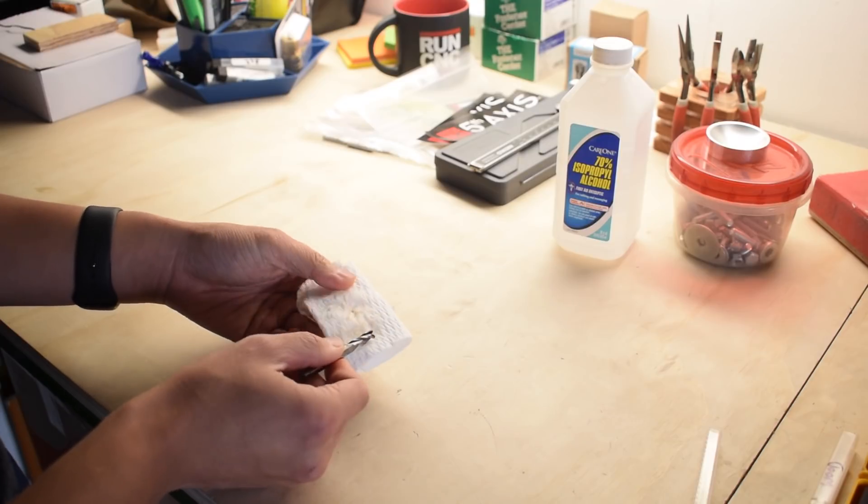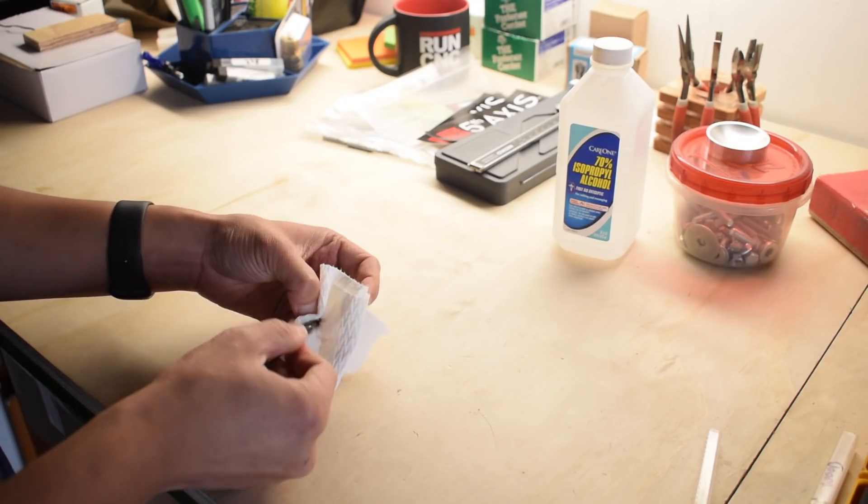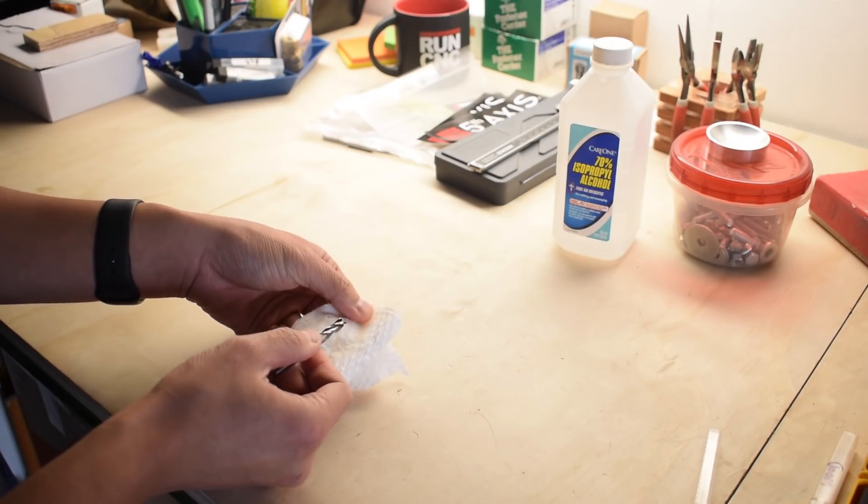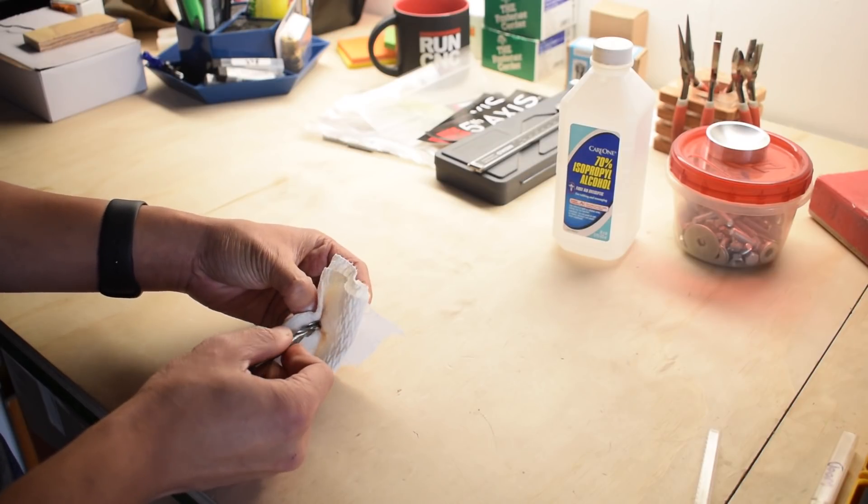Just remember to keep a couple layers of paper towels between you and the end mill when you're wiping it down. Carbide does a really good job of leaving paper cut-like slices in your fingertips. Don't ask me how I know.